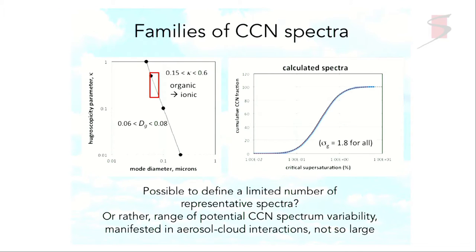Looking at some typical range of hygroscopicities between about 0.15 and 0.6 — most of the observations that have been published in many parts of the globe have a range in this space — we find that if median diameters are within about 0.06 to 0.08 microns, we get very similar spectra out of that, as we can see from the similarity line. So the question I ask is: is it possible to define a limited number of representative CCN spectra, really a reasonable range of potential spectrum variability, that can manifest in aerosol-cloud interactions that may not be as large as it seems when we think about the true complexity of the atmospheric aerosol?